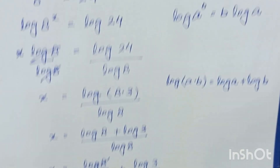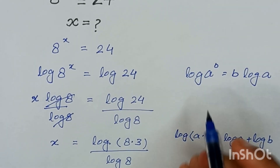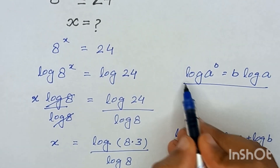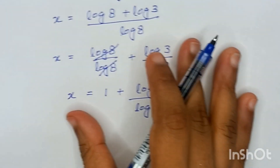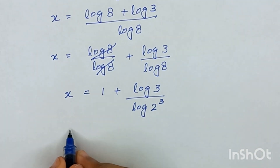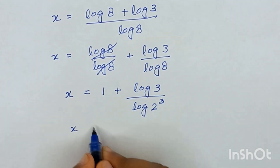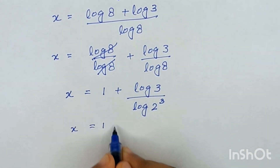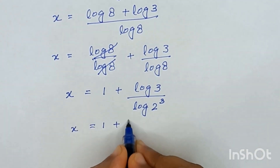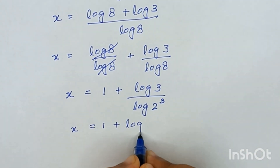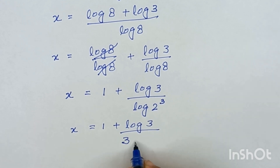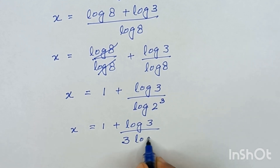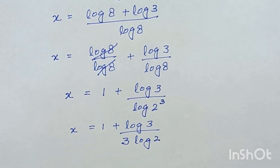Applying the logarithm rule again, it will become x is equal to 1 plus log of 3 divided by 3 times log of 2.